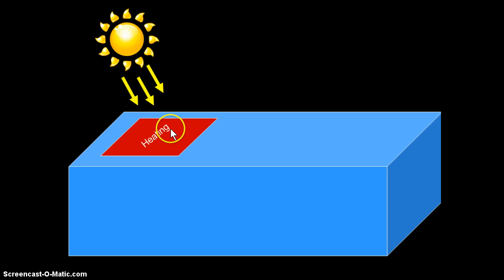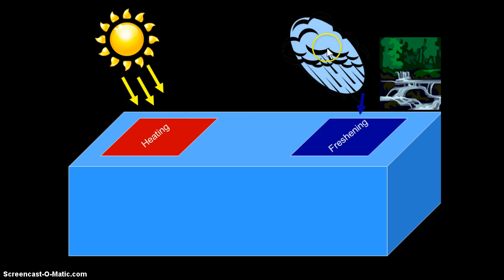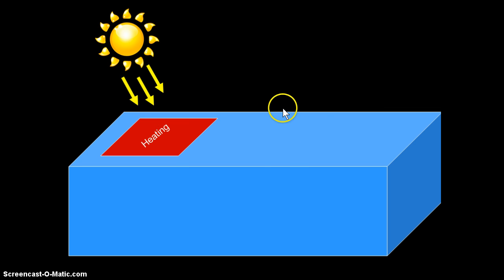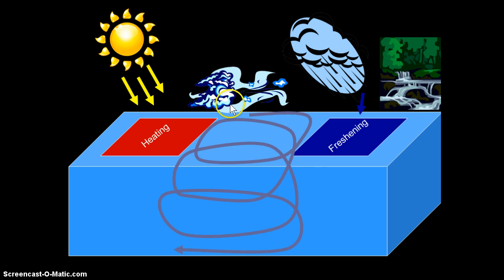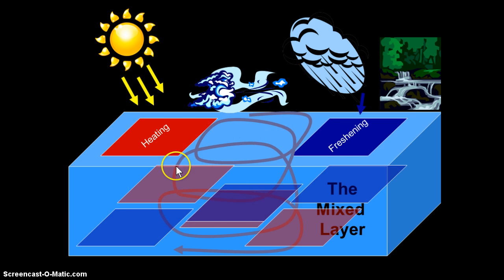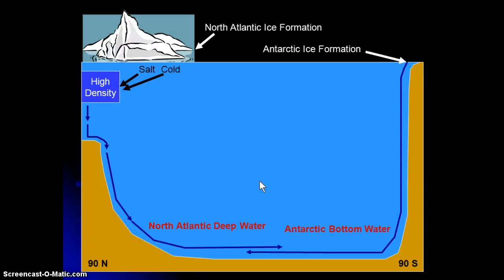The surface ocean gets heat from the sun, fresh water from rain and runoff from the land, and then the wind mixes that whole layer so that we have a uniformly warm, fresh, less dense surface layer. So what about the deep layer?